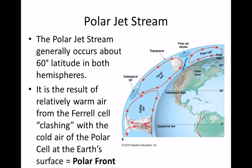In the Northern Hemisphere, we have the subtropical jet and the polar jet, and similarly in the Southern Hemisphere between the cells. The polar jet stream is between the polar cell and the Hadley cell. We also want to talk about what we call the polar front, which exists between the polar cell and the Ferrel cell.